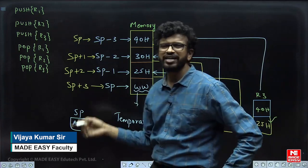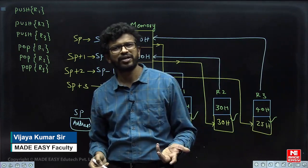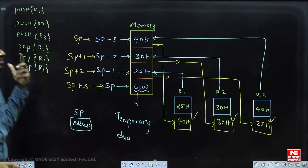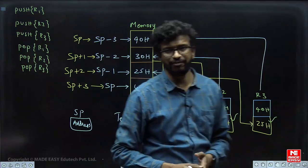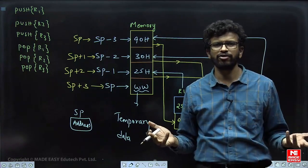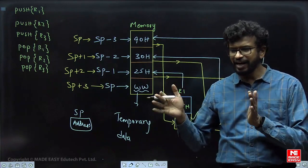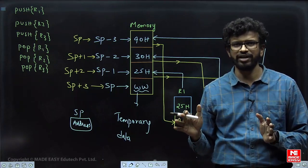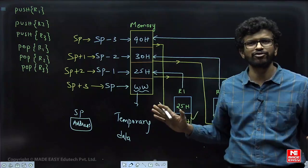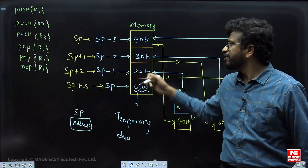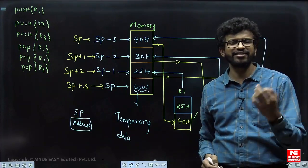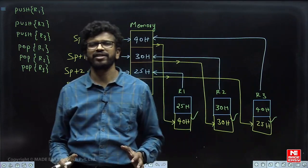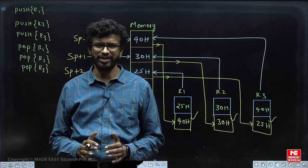In push, SP is decremented; in pop, SP is incremented. The correct answer is option A. This is how questions can be expected in Computer Organization — if you know the basic concepts you can solve them easily. For the GATE exam, it is entirely based on basic concepts. Even though 3 minutes is allocated, it requires only 1 minute if you know the concepts. Thank you so much.